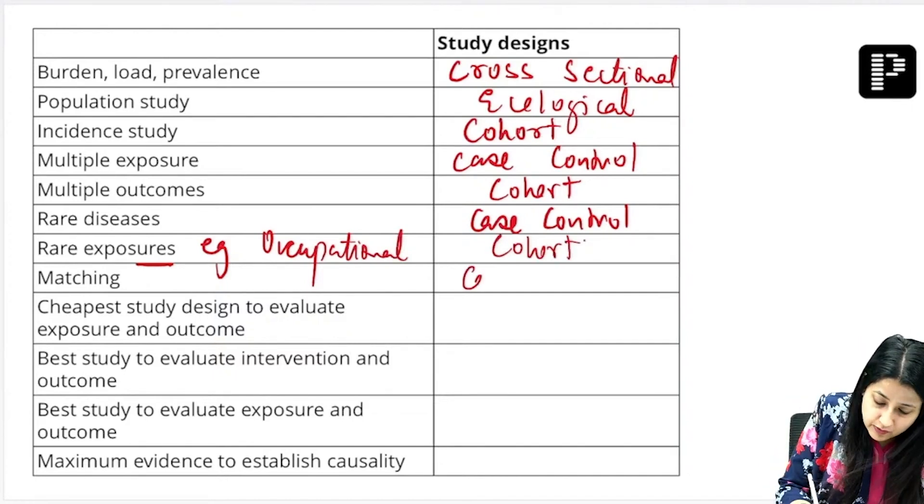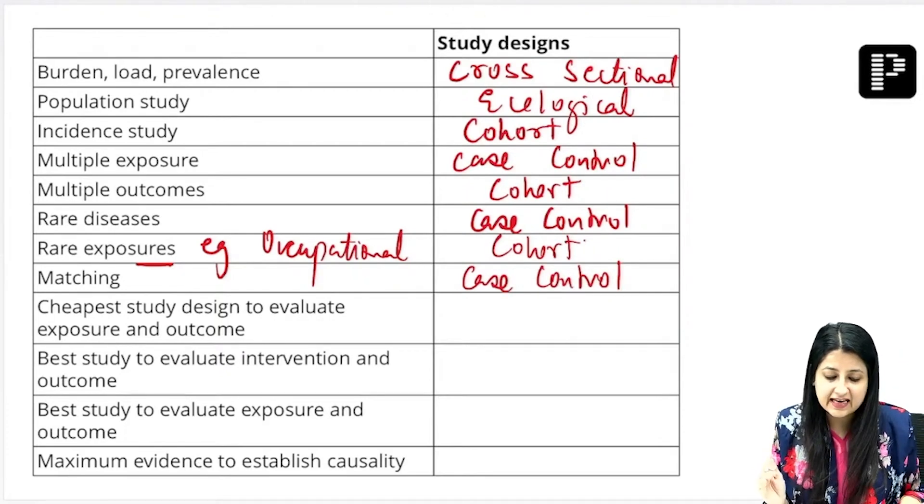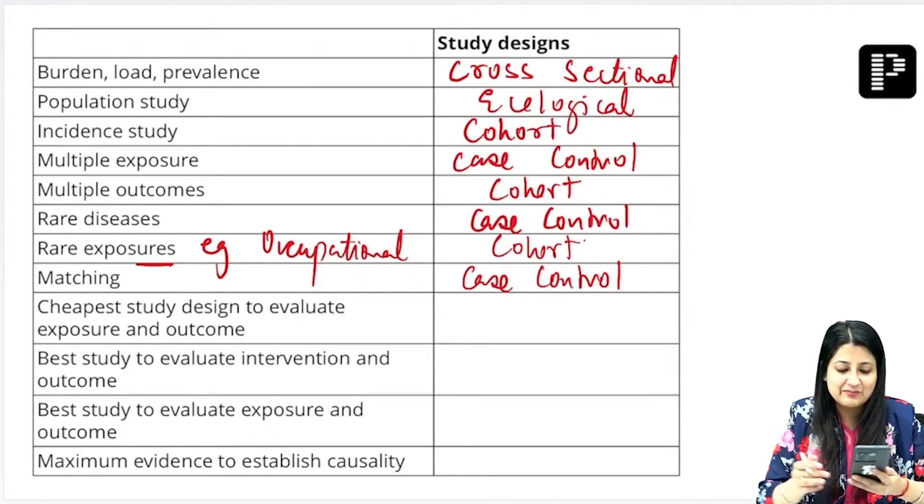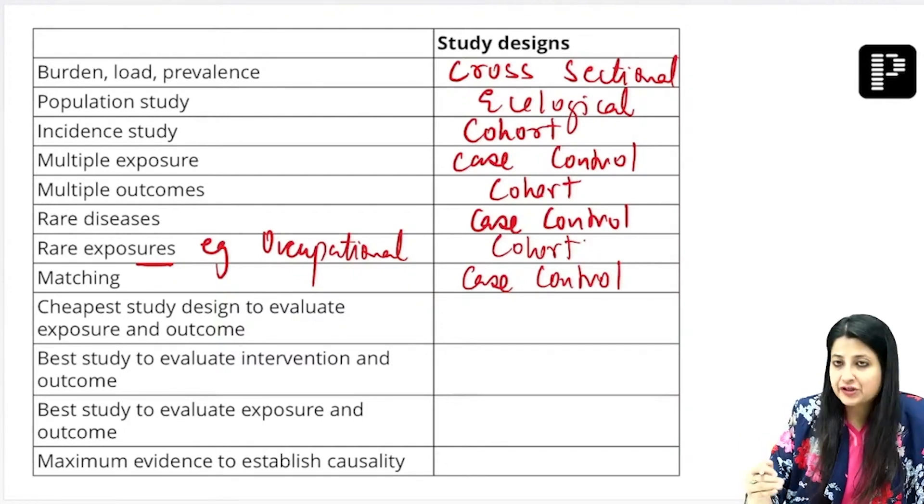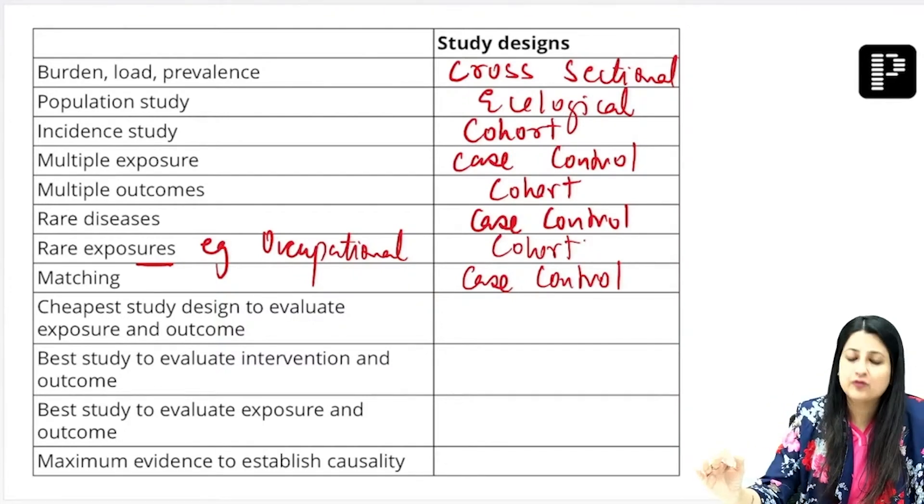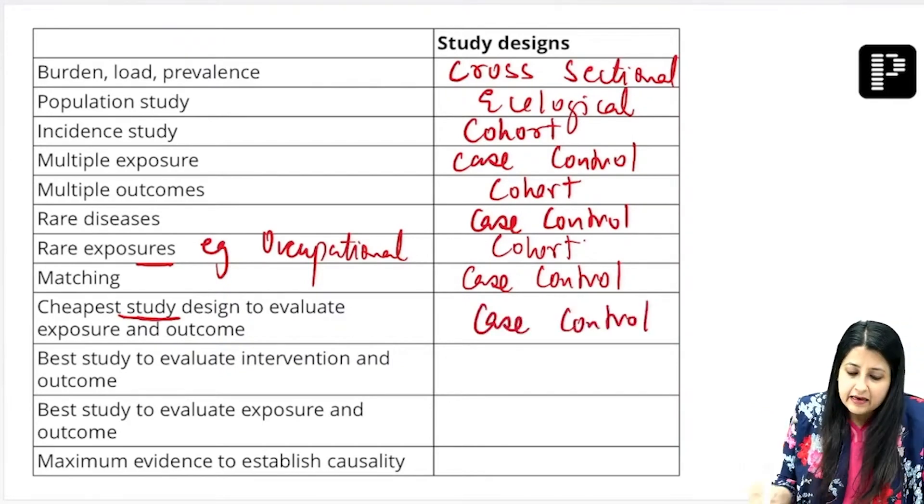Matching—where do you use the word matching? Case control. And like I said, it eliminates only the known confounders. Cheapest study design to evaluate exposure and outcome? You have case control, you have cohort also, but cheapest is which one? Cheapest is case control.